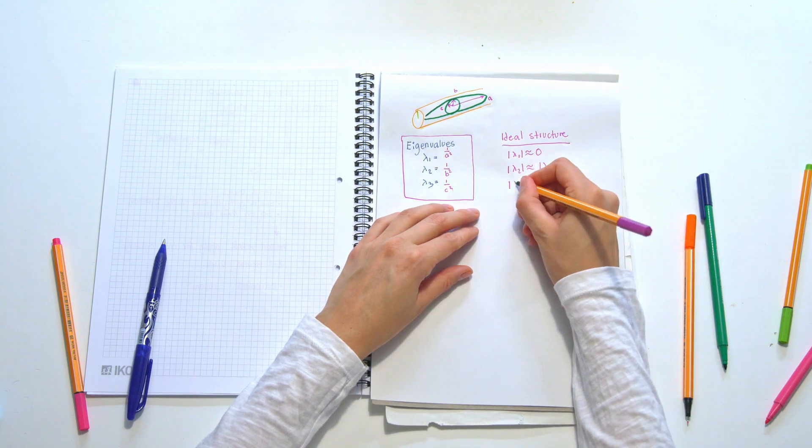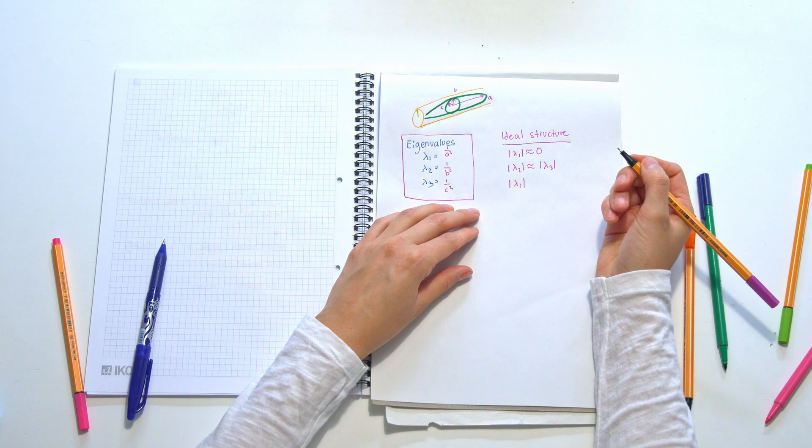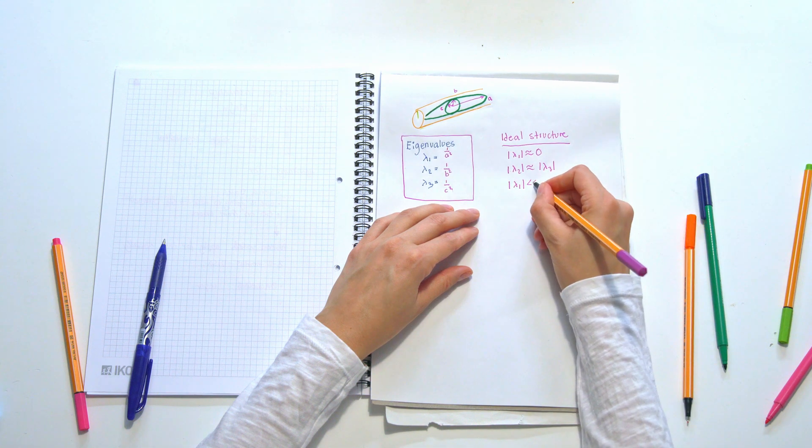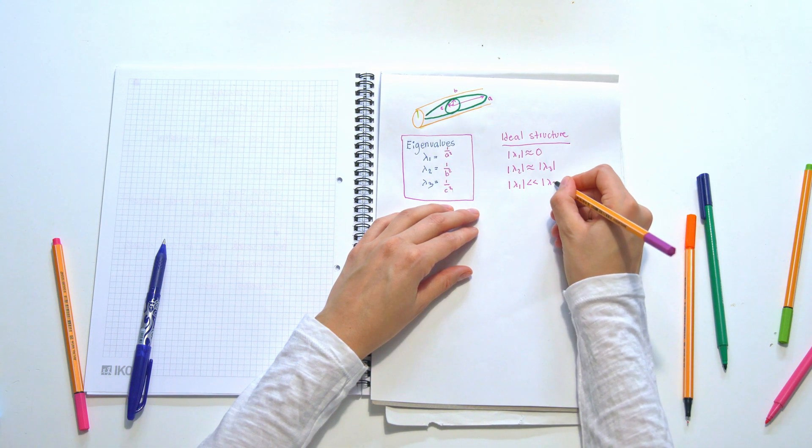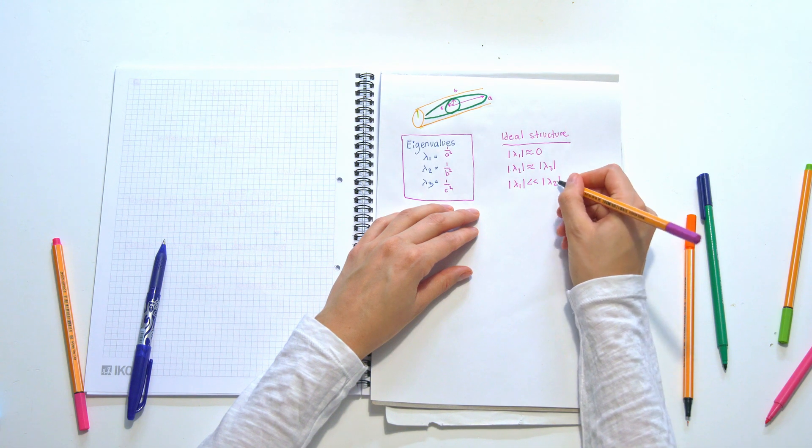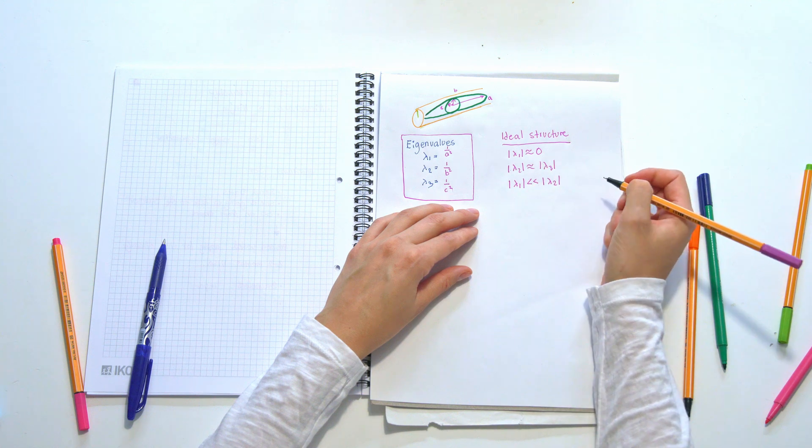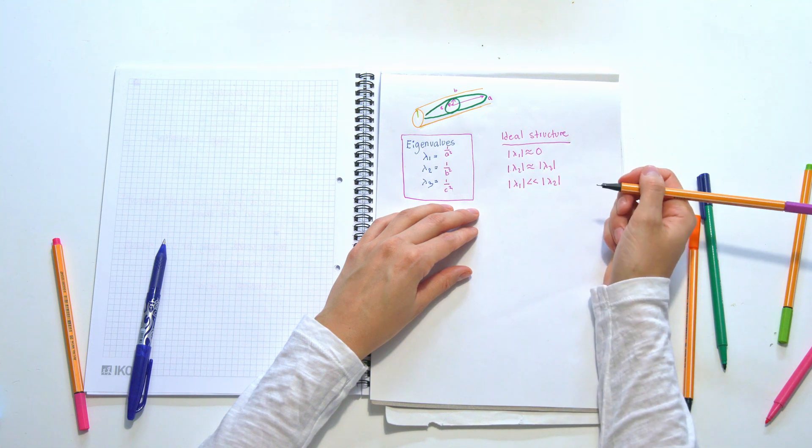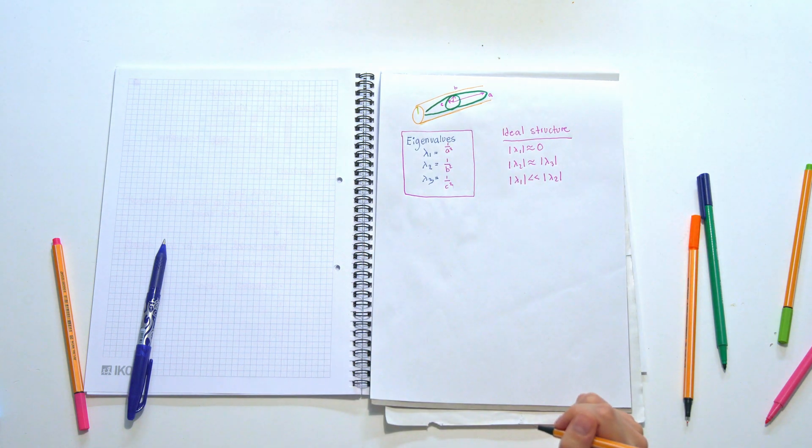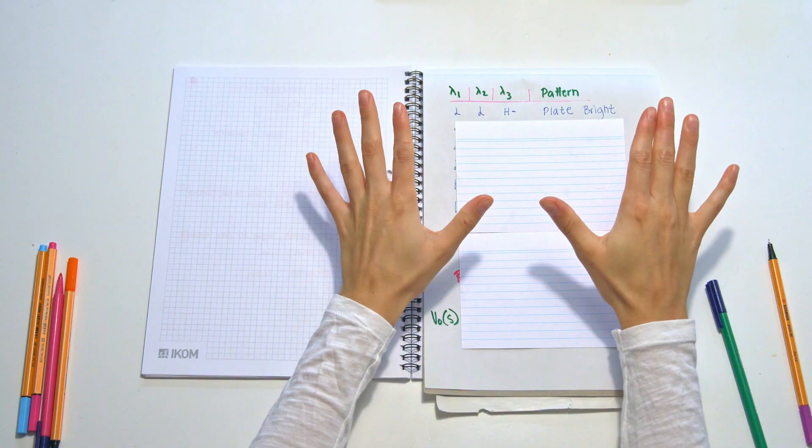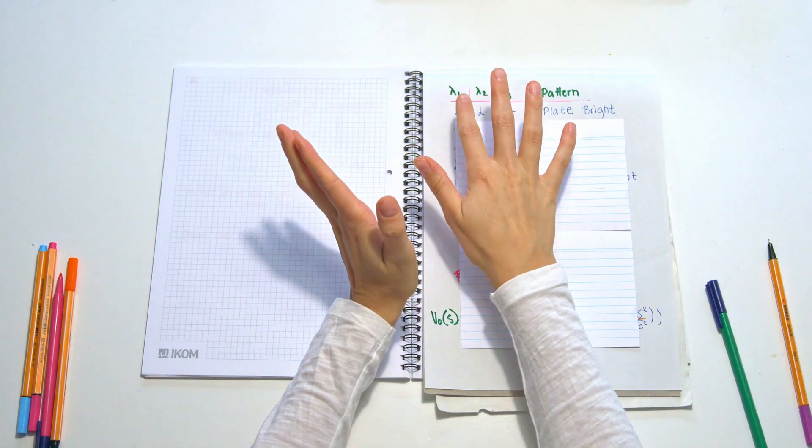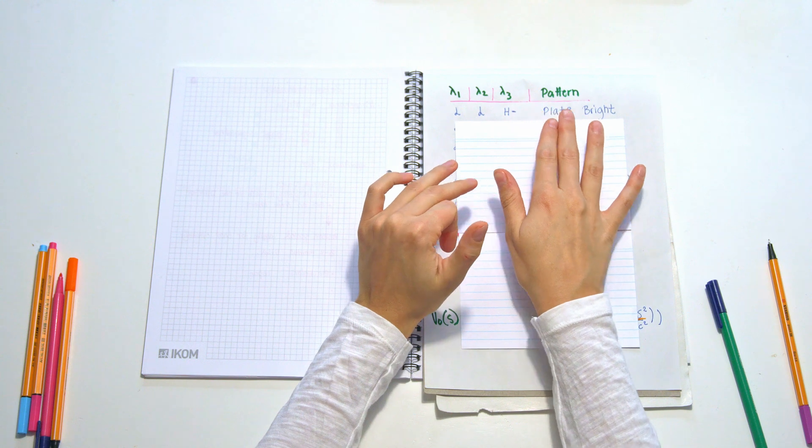So we want lambda 1 to be much smaller than lambda 2. You could have said lambda 3 here as well because they're basically the same size. So much smaller than lambda 2 or lambda 3. This is the most interesting part when we have lambda 1, lambda 2, and lambda 3.